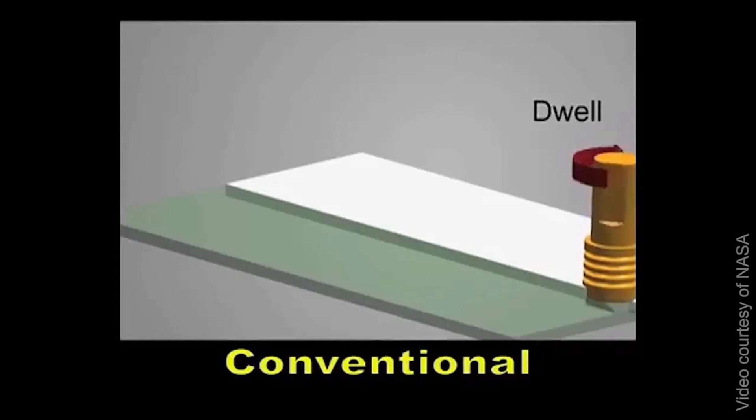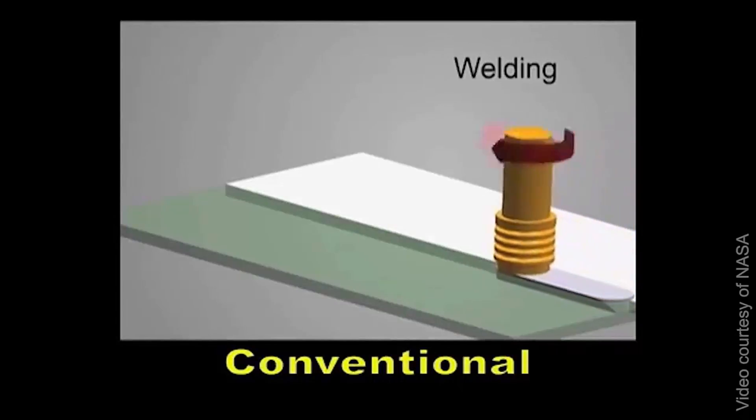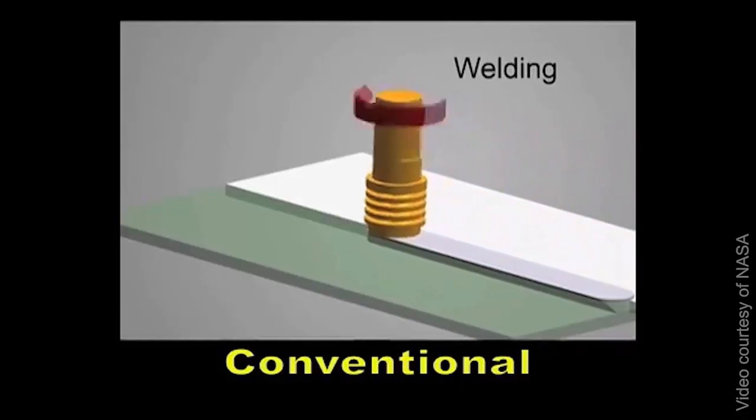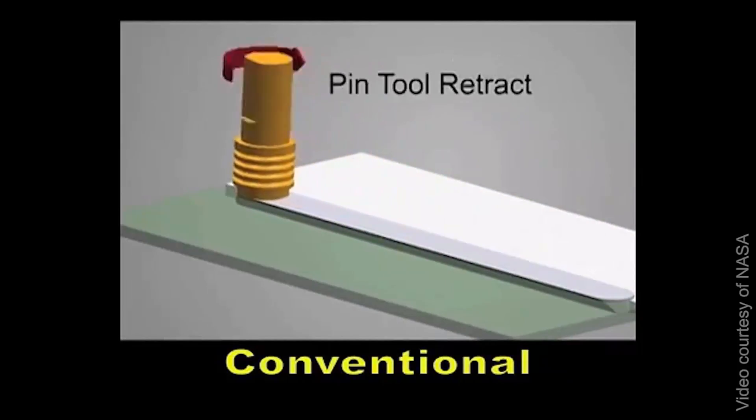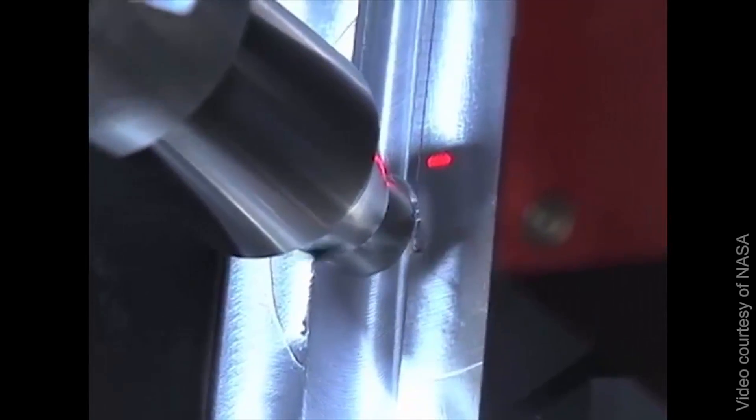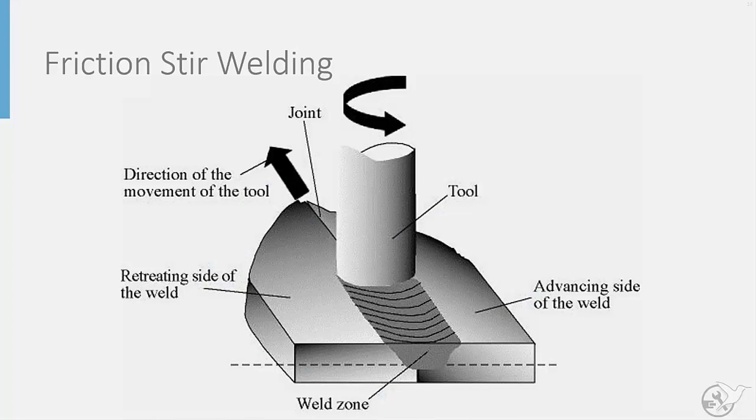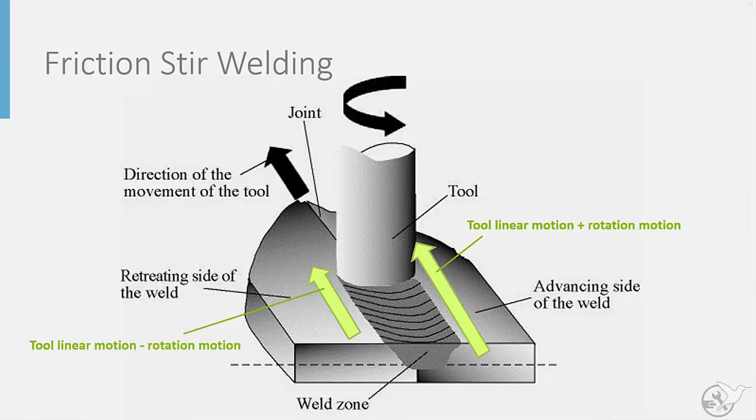The friction and stirring action is provided by a rotating pin tool that plunges into the material being joined. As the tool both moves linearly along the joint and rotates, the speed of the material is faster on the advancing side of the weld compared to the retreating side of the weld. This difference in speed results in a difference in the mixing and thus overall properties on each side of the weld.